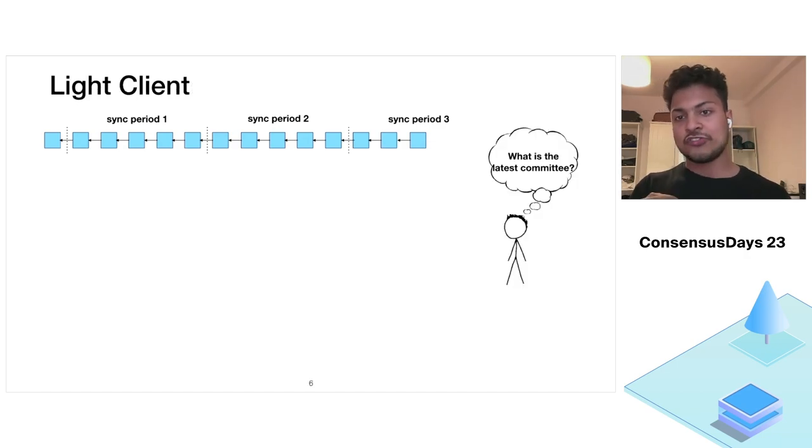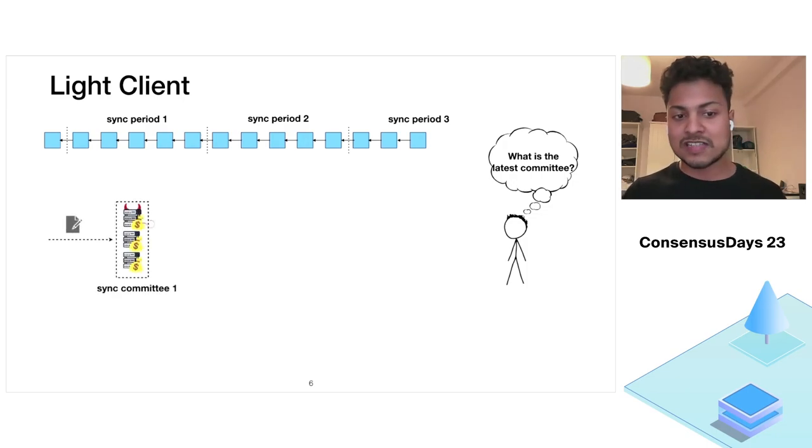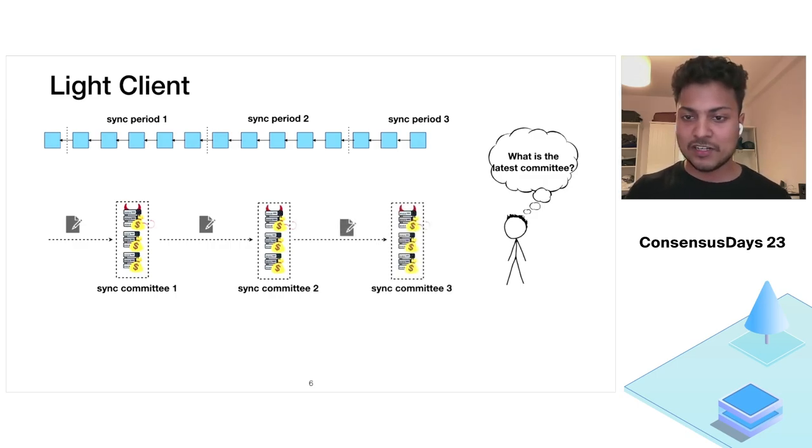So now let's use the sync protocol to construct a more efficient client construction. So let's say Bob now knows the Genesis sync committee. Bob can connect to any full node and ask the full node to provide signatures from the Genesis sync committee on the first sync committee, and then provide the signatures from the first to the second and so on until it reaches to the latest sync committee. Once it has reached the latest sync committee, it can simply ask for the signatures of the latest committee on the latest block. And once it knows the latest block, as we know that the state of Ethereum is stored as a Merkle root, it can simply ask the interested state with a Merkle inclusion proof.